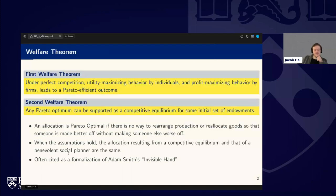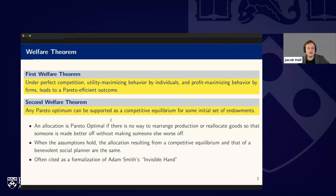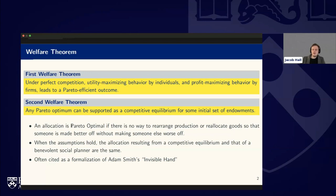There are two famous welfare theorems in economics. The first welfare theorem says that under perfect competition — with utility-maximizing behavior by individuals and profit-maximizing behavior by firms — we get Pareto efficient outcomes. A Pareto efficient outcome is an allocation where there is no way to rearrange production or reallocate goods so that someone is made better off without making someone else worse off.